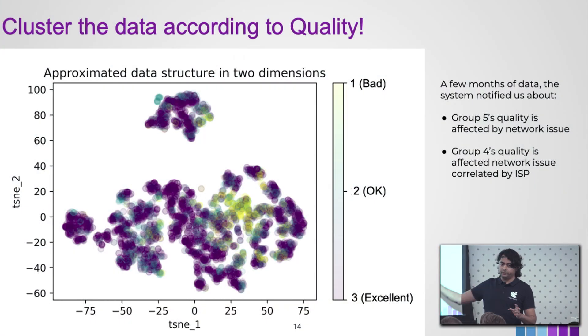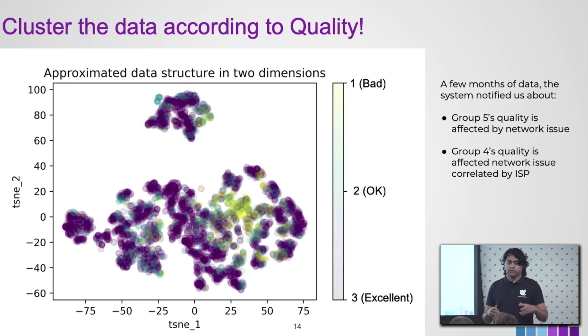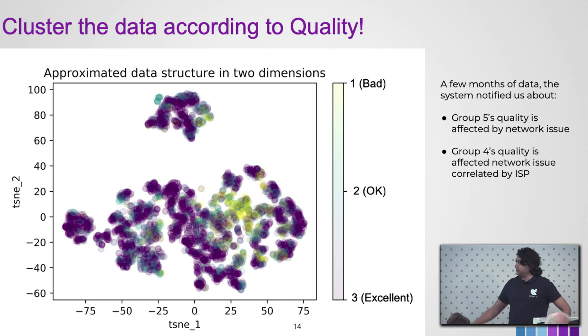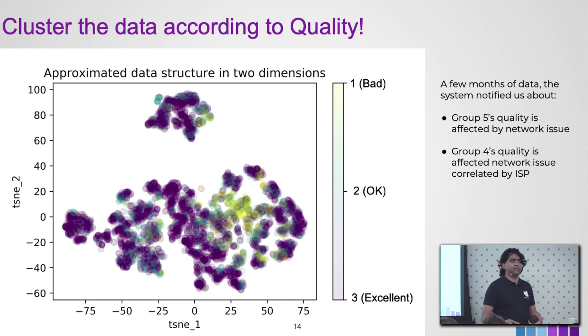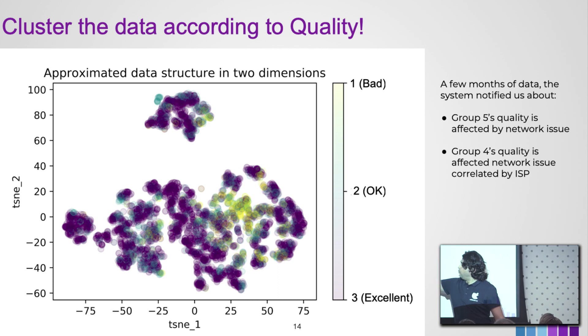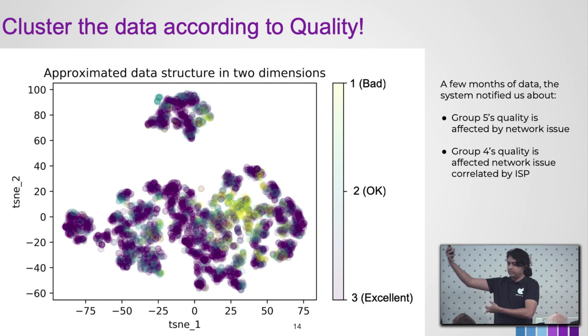We took one service and ran it through the system at the beginning of the year, and this is one of the data points we got. This is an objective quality metric: between one and two is bad, two to three is okay, and above three is good. We gave it all this data, it clustered it — this is just a representation, it's a multi-dimensional model, almost 50 dimensions. We used PCA and t-SNE to bring this down to two dimensions for visualization. What you see is one group here and another group there — it already clustered them into two different areas.